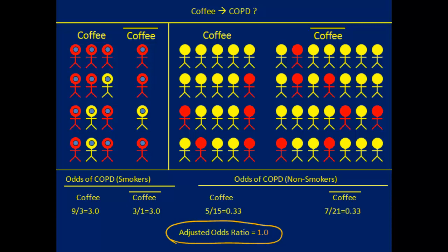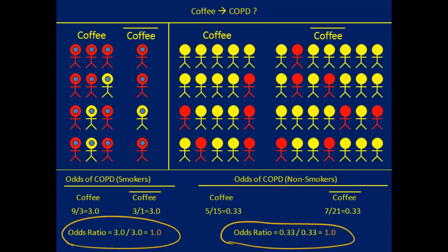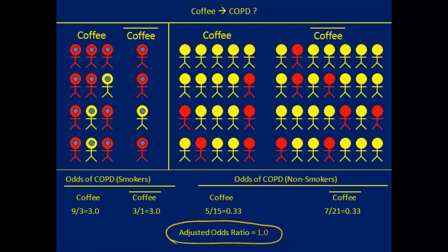Why do we want to create an adjusted estimate? We could think about the results stratum by stratum — for example, we found no association between coffee and COPD among the smokers, and no association among the non-smokers. This would be perfectly correct. The reason we create an adjusted effect estimate has to do with the precision with which we can estimate the association between exposure and disease. The general idea is that you want the largest group of individuals in which to estimate the association because you get a clearer idea about that association.